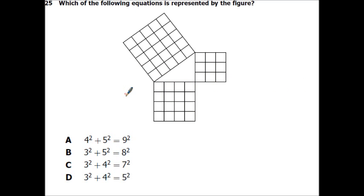This says which of the following equations is represented by the figure. So this is a right triangle because you have a right angle. So you have four units across, three units across, and five units across. So this is your hypotenuse. So this is really just saying three squared plus four squared equals five squared. So that would be right there.